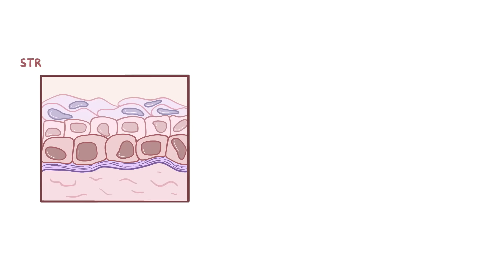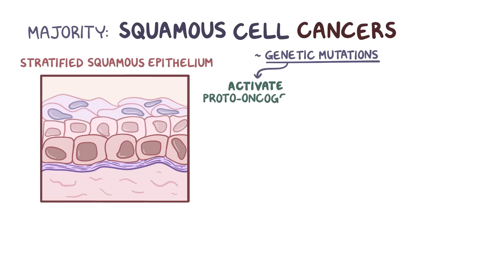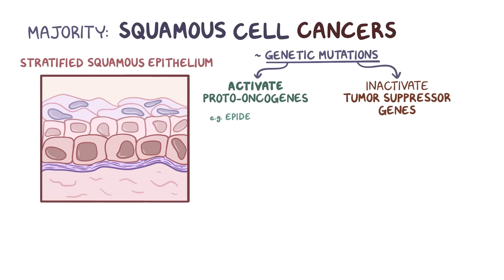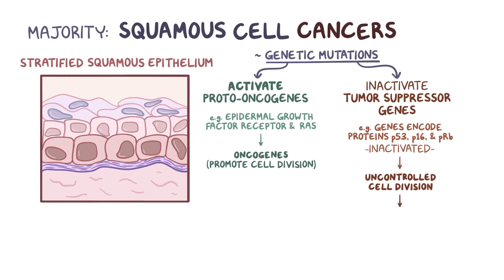Most of the oral cavity is lined by stratified squamous epithelium, so the majority of cancers that arise are squamous cell cancers. Squamous cell cancers arise from squamous cells that undergo genetic mutations that either activate proto-oncogenes or inactivate tumor suppressor genes. When proto-oncogenes like epidermal growth factor receptor and RAS are activated, it turns them into oncogenes that promote cell division. And when tumor suppressor genes like those that encode proteins P53, P16, and the retinoblastoma protein, also called PRB, are inactivated, it removes the inhibition to cell division. So together there's uncontrolled cell division which can give rise to a tumor.